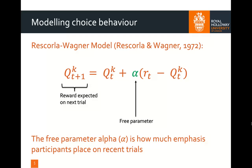The learning rate alpha is how much emphasis participants place on recent trials. To give an example: say I was making a decision about whether or not I'm going to go out tomorrow. I don't know what the weather's going to be like, but I need to estimate it based on the information available to me — just my observations of the weather. If I have a really high alpha, a high learning rate, I'm going to place really high emphasis on the most recent events — i.e., what the weather was like today — and that would be all I use to make my decision about whether or not I'm going out tomorrow.